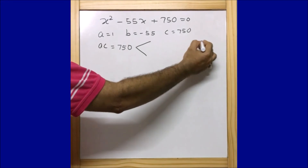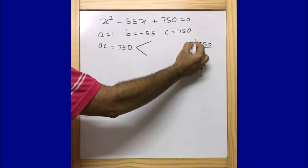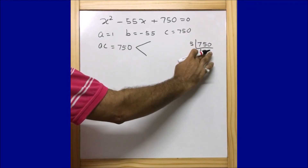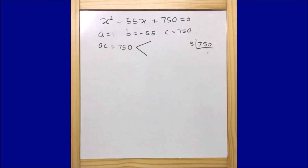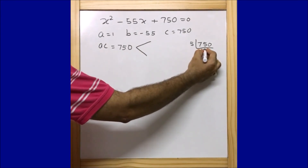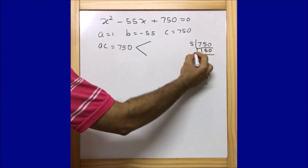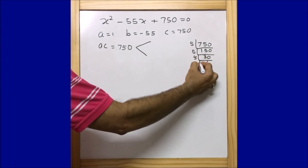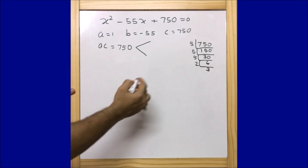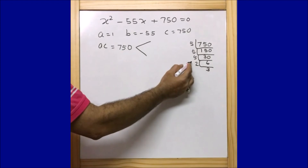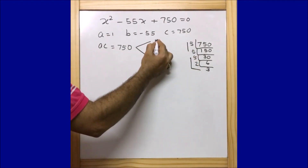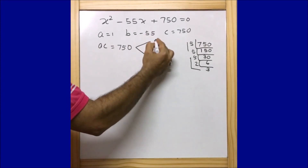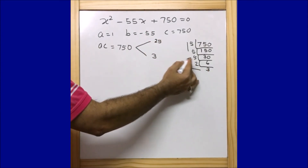Let us first find the factors of 750. Breaking it down: 750 divided by 5 is 150; 150 gives factor pairs involving 5, 25, and 30. We get factor pairs such as 5×150, 25×30, 6×125, and related combinations from the prime factorization.